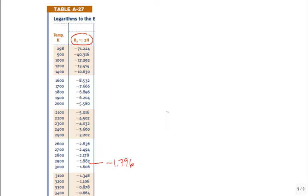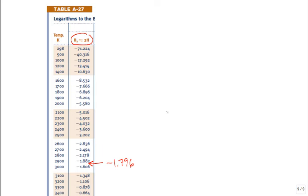Since log₁₀(K) = −1.796 falls between the table values at 2900 K and 3000 K, the temperature is between 2900 and 3000 K. Using linear interpolation gives us the temperature. A more accurate interpolation is also possible.